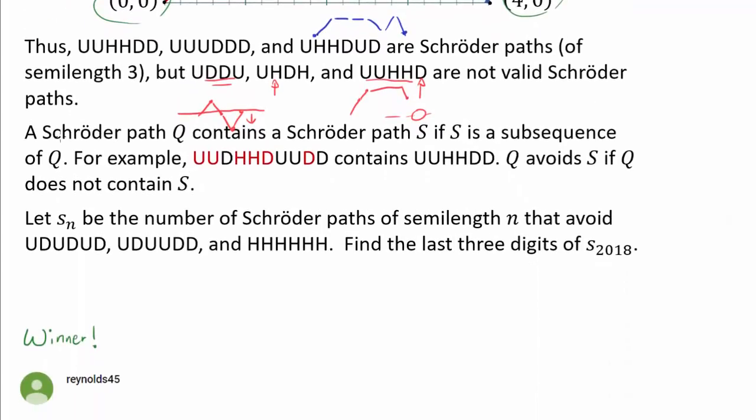Okay, so now that we know what a Schröder path is, what's the question? A Schröder path Q contains a Schröder path S if S is a subsequence of Q. For example, UUDHHDDUUDD contains UUHHDD as shown.